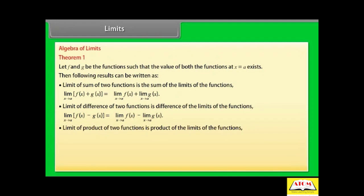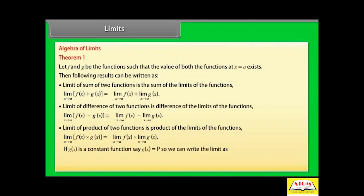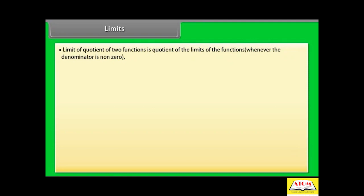The limit of the product of two functions is the product of the limits: limit x→a of [f(x) · g(x)] = limit x→a of f(x) × limit x→a of g(x). If g(x) is a constant function, say g(x) = p, then limit x→a of [p · f(x)] = p × limit x→a of f(x). The limit of the quotient of two functions is the quotient of the limits, whenever the denominator is non-zero: limit x→a of [f(x) / g(x)] = limit x→a of f(x) / limit x→a of g(x).